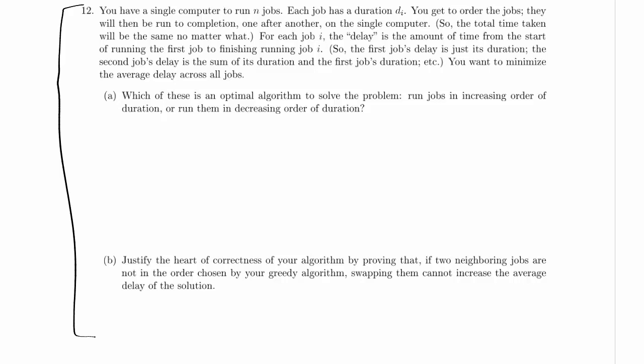For each job I, the delay is the amount of time from the start of running the first job to finishing running job I. So the first job's delay is just its duration. The second job's delay is the sum of its duration and the first job's duration because it doesn't get to start until the first job finishes, and then the delay will be longer and longer for each one. It's the total time taken to get to the end of that job. And what we want to do is minimize the average delay across all the jobs.